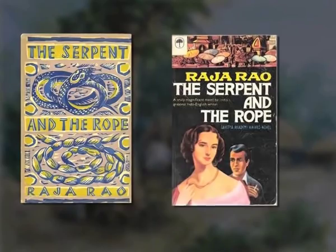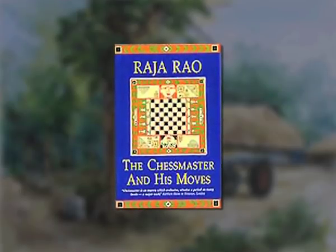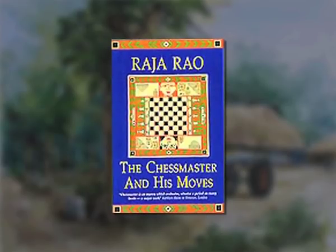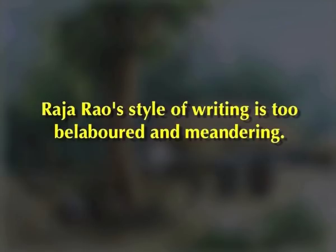His other works include The Serpent and the Rope in 1960, a semi-autobiographical novel about the spiritual search for truth, The Cat and Shakespeare in 1965, Comrade Kirillov in 1976, The Chess Master and His Moves in 1988, and a number of other short stories. His strengths are his encyclopedic knowledge and his essentially Indian style of writing. But some critics consider these weaknesses, arguing that he is not able to control his materials and that his style is too belabored and meandering.